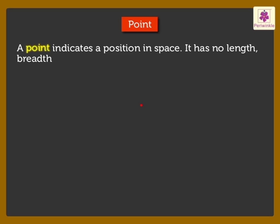Point. A point indicates a position in space. It has no length, breadth or thickness. P, R and S are all points in space.